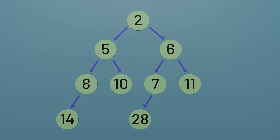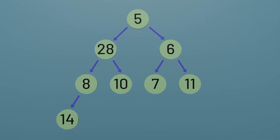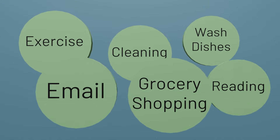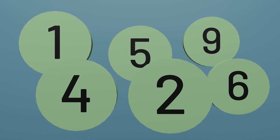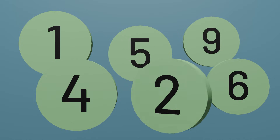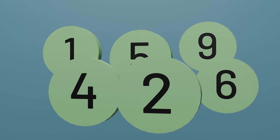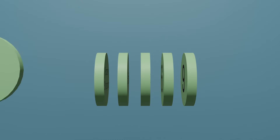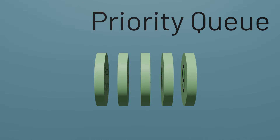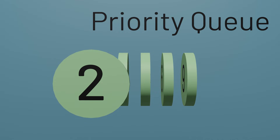Binary heaps are especially useful data structures used in a variety of contexts, but why would we want to use one, how do they work, and what problems do they solve? To answer these questions, let's start with a problem. Let's say you have some tasks to complete and each task has a priority — some number representing the task's importance — and you want to organize tasks such that you can easily access your most important task first. This way of organizing data is called a priority queue: a collection of values where at any time we always want access to the most important item.